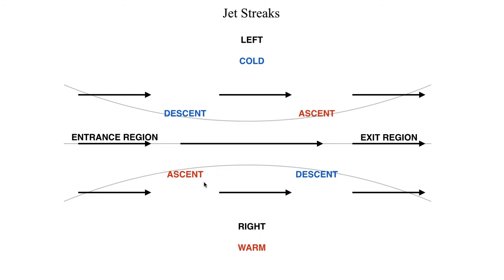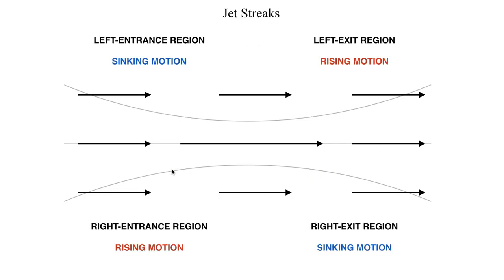So to summarize: left exit region and right entrance region are where you're going to have rising motion present in the atmosphere, which means you might have an unsettled pattern at those two particular points in the jet streak. Right exit region and left entrance region are where you'll find sinking motion. Just keep in mind how we define exit region and entrance region, and also how we define left and right of the jet streak.